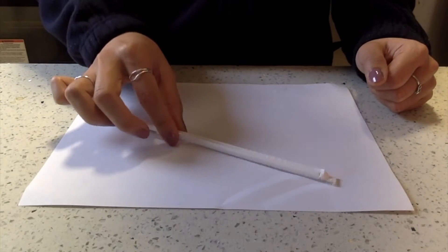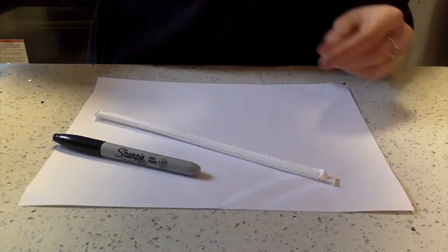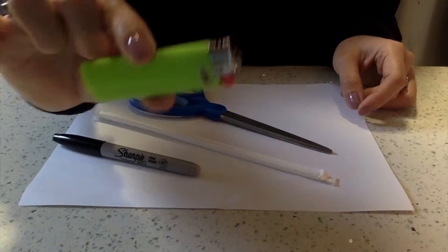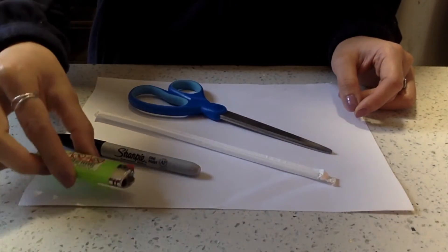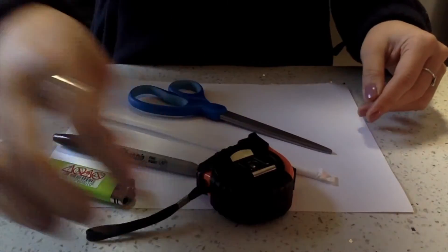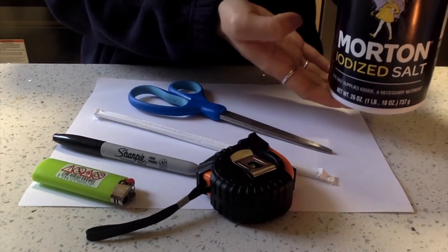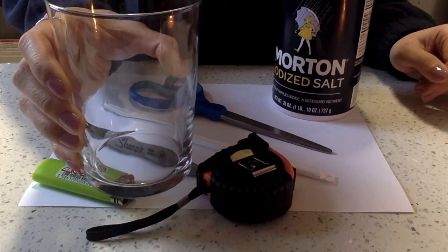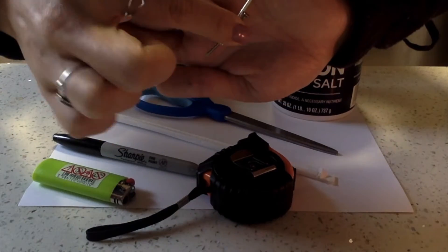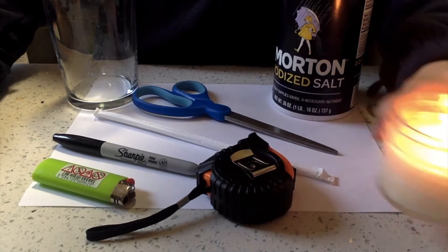Some materials you will need: a plastic straw, a permanent marker, a pair of scissors, a lighter, measuring tape or a ruler, salt, a water glass (the thinner and taller the better), metal nails, and a candle.